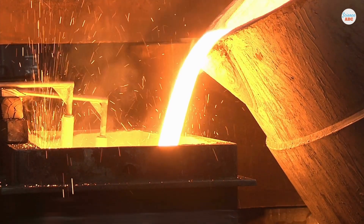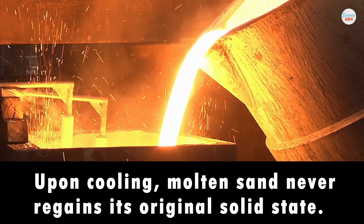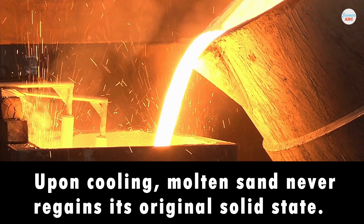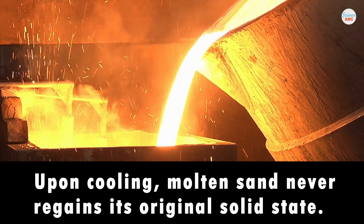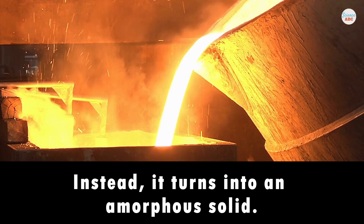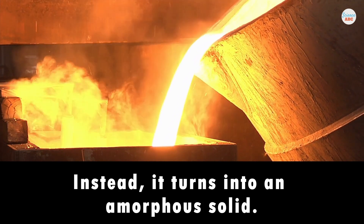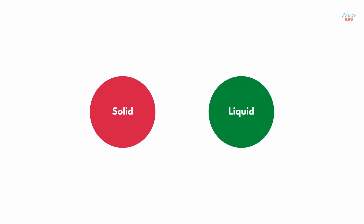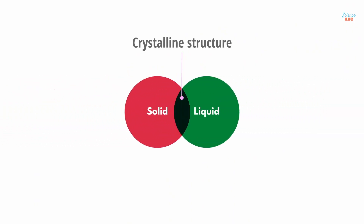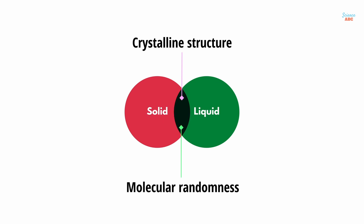Regardless of the techniques employed in cooling the molten sand, it never quite sets into a traditional solid. Instead, it turns into a frozen liquid or an amorphous solid. Glass is more like a cross between a solid and a liquid, featuring crystalline structures generally found in solids, as well as some molecular randomness commonly seen in liquids.